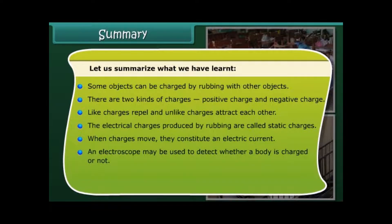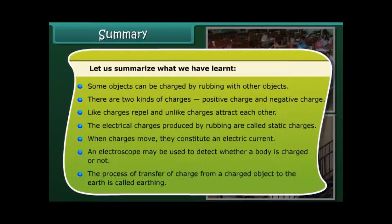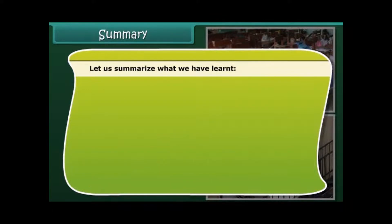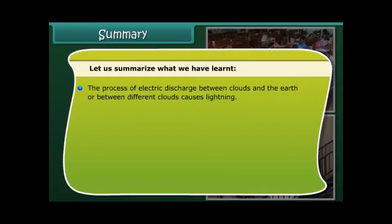When charges move, they constitute an electric current. An electroscope may be used to detect whether a body is charged or not. The process of transfer of charge from a charged object to the earth is called earthing. The process of electric discharge between clouds and the earth or between different clouds causes lightning. Lightning strike could destroy life and property.